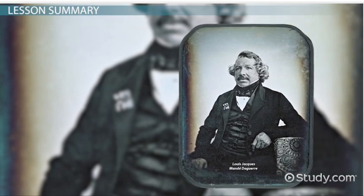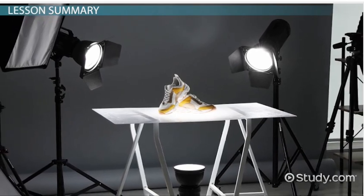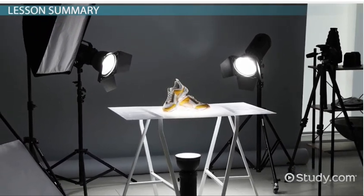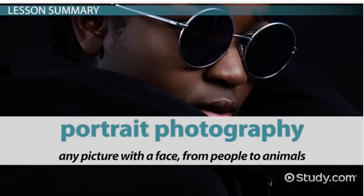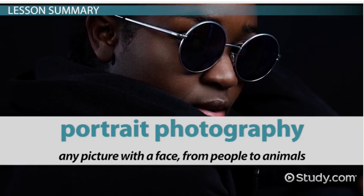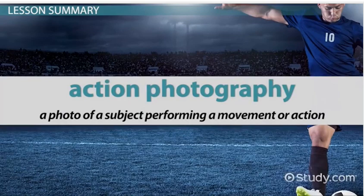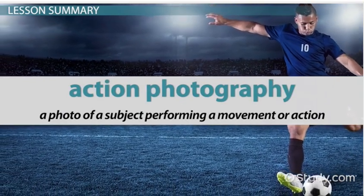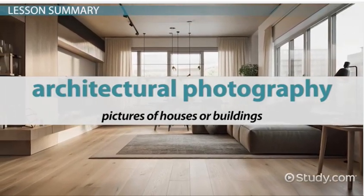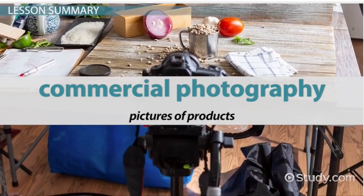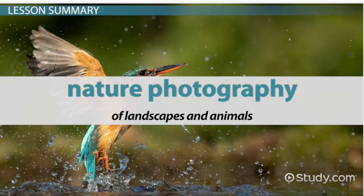Photography has come a long way since its creation in 1839. Advertisers utilize different types of photography to create eye-catching advertisements. Some examples include: portrait photography — any picture with a face, from people to animals; aerial photography — a type of overhead shot; action photography — a photo of a subject performing a movement or action; architectural photography — pictures of houses or buildings; commercial photography — pictures of products; and nature photography — images of landscapes or animals.